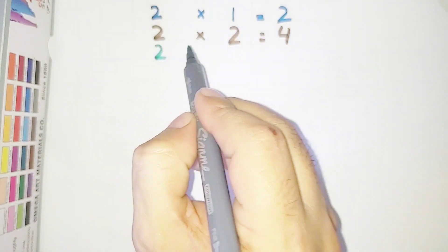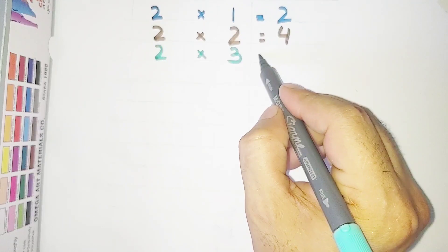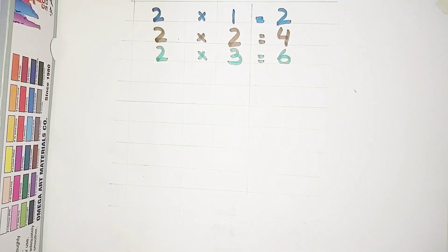2 multiplied by 3 is equal to 6. 2 threes are 6.